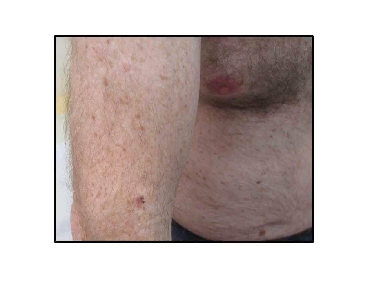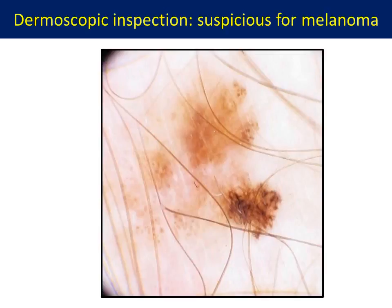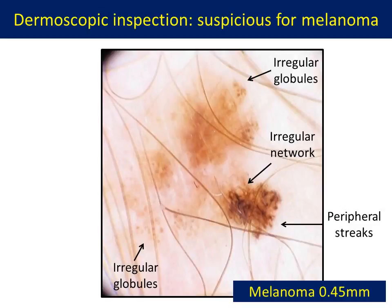Here's an example. There's no doorway melanoma here, but there is a concerning lesion. Looking closely, we can see this is a pigmented lesion, hinting that this may be melanocytic. We see an asymmetric silhouette and multiple shades of color. With dermoscopy, this lesion shows multiple criteria for melanoma: asymmetry in the distribution of colors and structures, peripheral streaks, irregular network, and irregular globules. This is a melanoma — 0.45 mm in thickness.